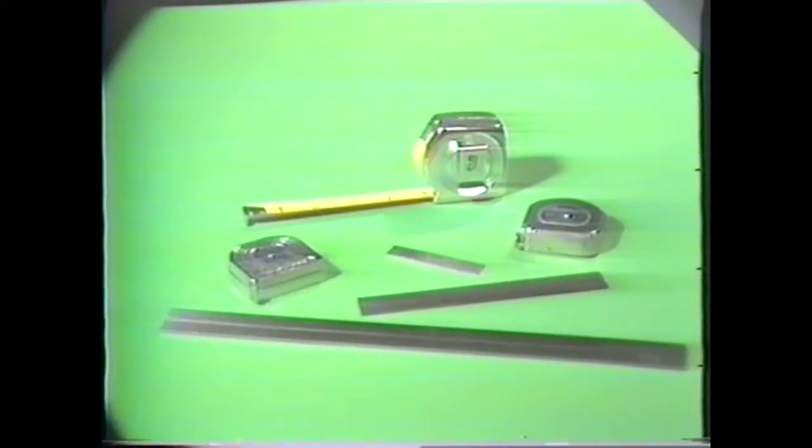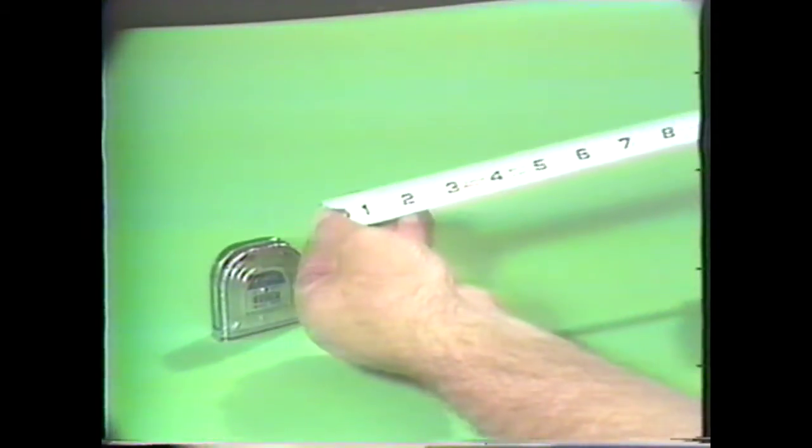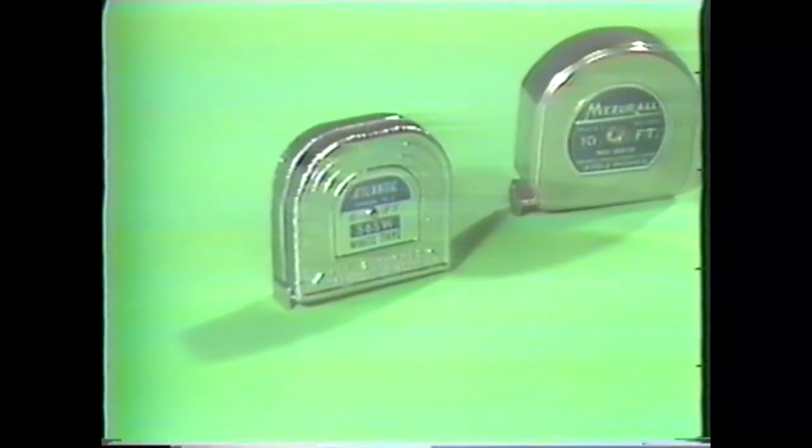The simple graduated measuring instruments you will find in the machine shop are measuring tapes and rules. Measuring tapes, also referred to as flexible tapes, are manufactured in a variety of lengths. However, the lengths most generally used in the shop are the 6 foot, 10 foot, and 12 foot.